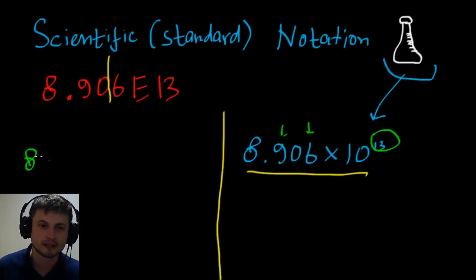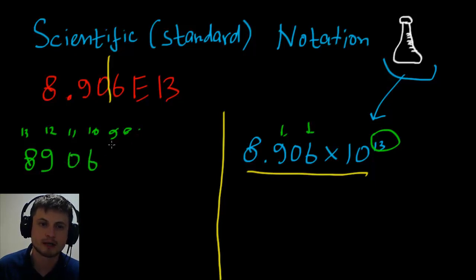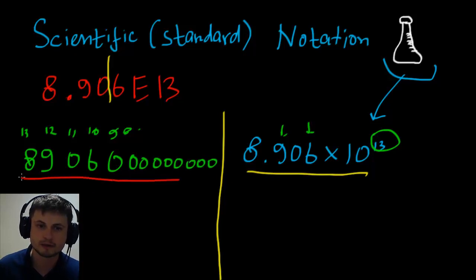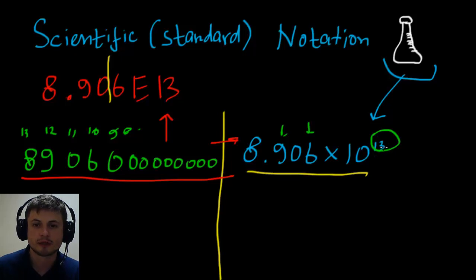After placing 8, 9, 0, 6, we have 9 more positions to fill with zeros — three groups of three zeros. That gives us the full decimal form equivalent to 8.906 times 10 to the power of 13. For positive powers it's relatively easy; for negative, it's a little bit trickier. Let's try a negative example.